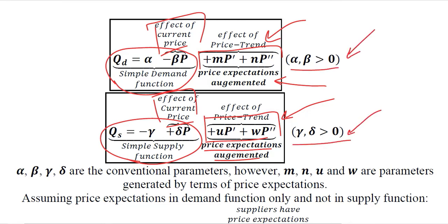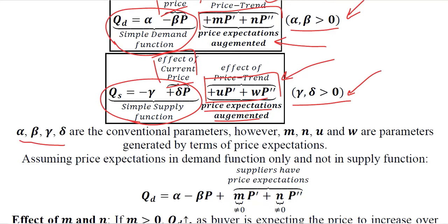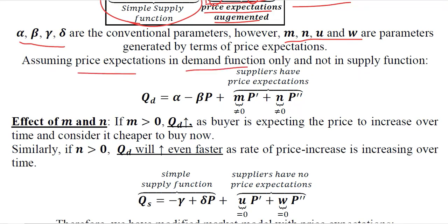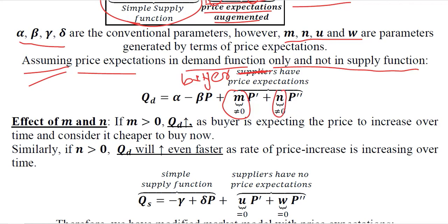We know the parametric restrictions for alpha, beta, delta, and gamma — the conventional parameters. The new parameters introduced here were not present before. For simplicity, we assume price expectations appear only in the demand function and not in the supply function. Though suppliers also tend to have expectations, we assume only buyers have price expectations, so the supply-side derivative coefficients u and w are set to zero.